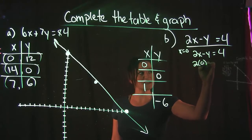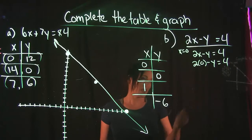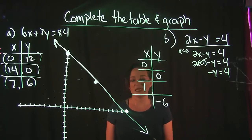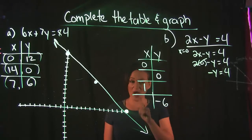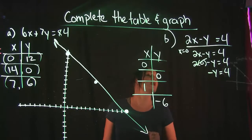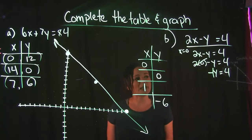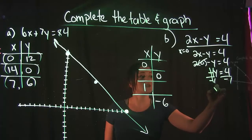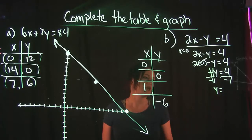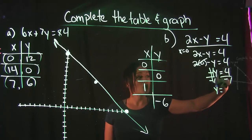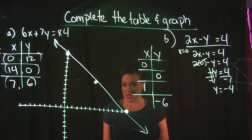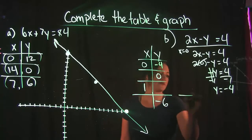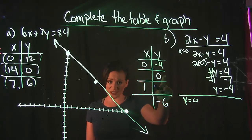Our equation for example B is 2x − y = 4. Plugging in 0 for X makes the first term go away, leaving us with −y = 4. That minus is like a negative 1 in front of Y, so we divide both sides by negative 1. That gives us Y = −4. So when X is 0, Y is negative 4.